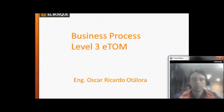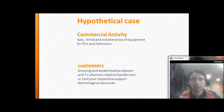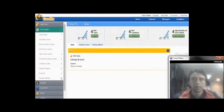Welcome everybody to Business Process Level 3 eTOM. My name is Oscar Ricardo Talora. This is an example of a hypothetical case. The commercial activities involve rental and maintenance of equipment for film and television. Customers include growing and established producers, and TV channels who need to handle or rent the respective support technology resources.